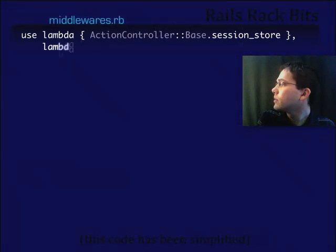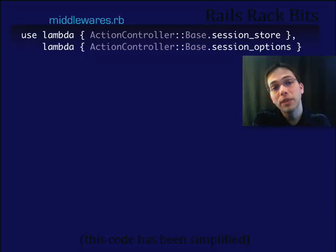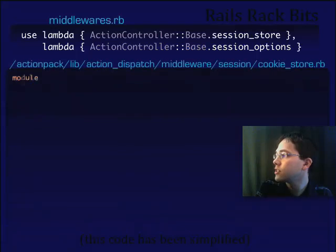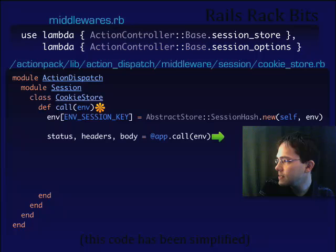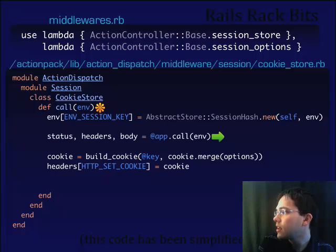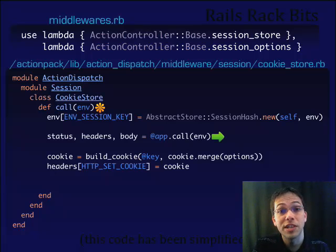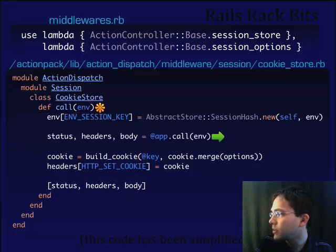Next up, we've got some session store middleware. Rails by default out of the box uses the cookie store, so let's take a look at the cookie store middleware. There's the call method, and it looks like we've got a session hash declared here as our session key. We then do our call forward, and on the response — check that out — we're building a cookie which contains our session items to send back to our client. So we build that cookie and send it right back.